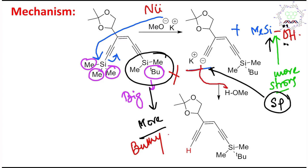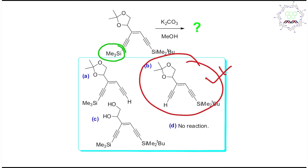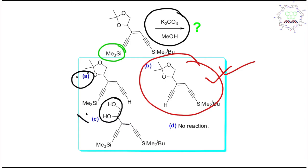In the second step, the carbanion abstracts a proton from methanol, regenerating methoxide — so the base is catalytic. The product is a terminal alkyne. Therefore, the answer is option B: TMS deprotection with proton attachment. Option A (TBDMS removal) is not possible due to bulkiness. Option C (ketal hydrolysis) is not possible under alkaline conditions. Option D (no reaction) is obviously not possible.